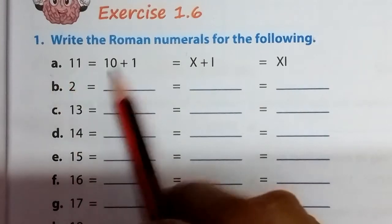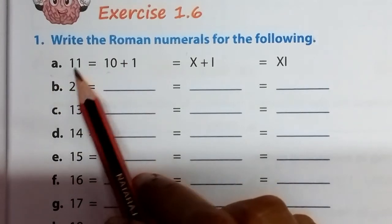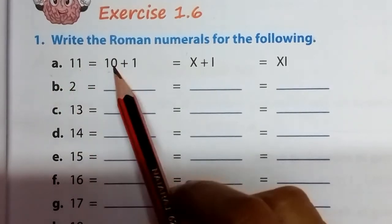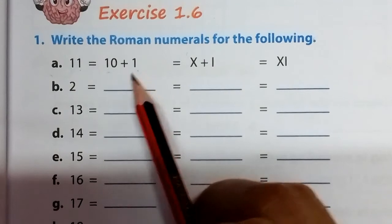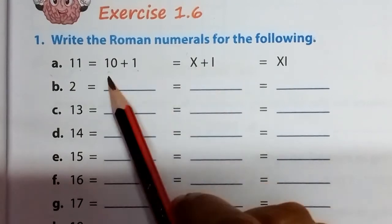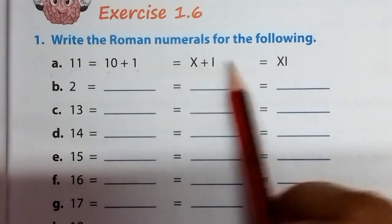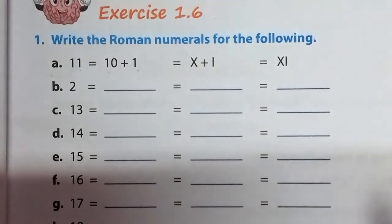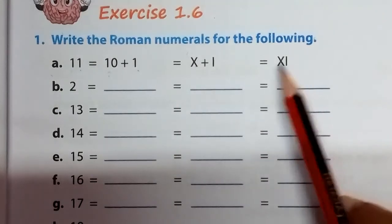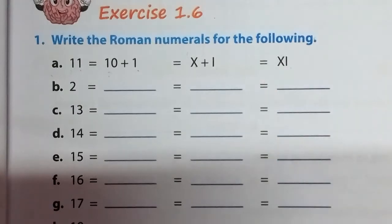First is done for you in advance: 11. 11 means 10 plus 1. The symbol of 10 is X, plus 1. 1 means one stick. Then combine both of them and write 11 like this: XI.